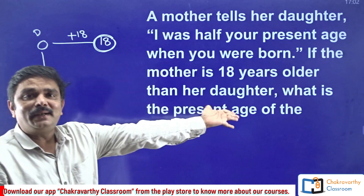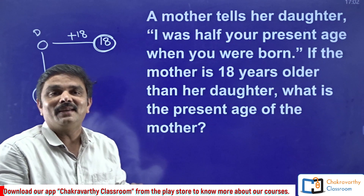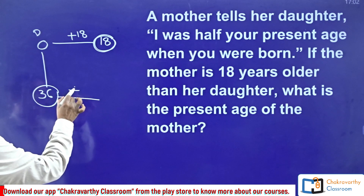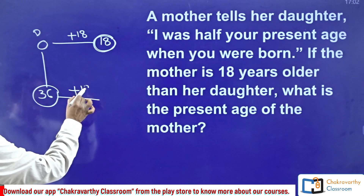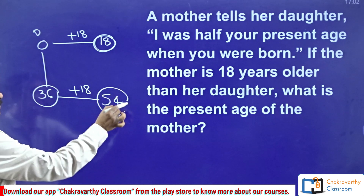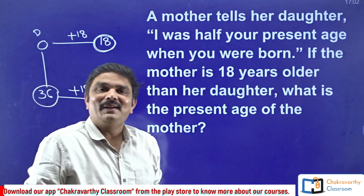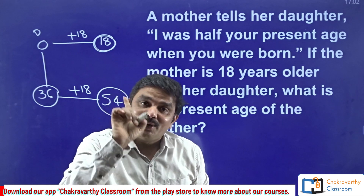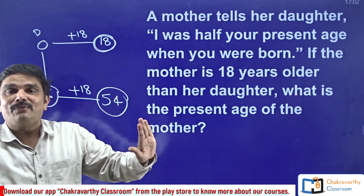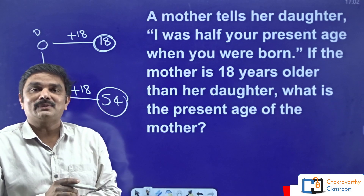What is mother's present age? This is what exactly they are asking. Mother's present age is daughter's age plus 18, so the answer is 54 years. How simple! You have to solve the questions in this way. Don't write anything on the paper. Thank you very much, students.